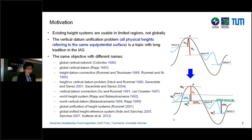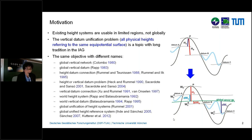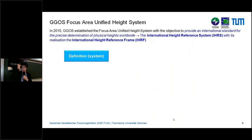This topic began to be studied in the frame of the IAG already in the 1980s, and you can see here a selection of publications dealing with this topic. As this was a hot topic in geodesy when GIGOS started, one of the priorities for GIGOS was the establishment of international standards for the precise determination of physical heights. This standard is called the International Height Reference System, and its realization is the International Height Reference Frame.